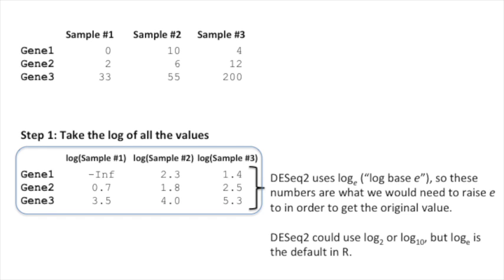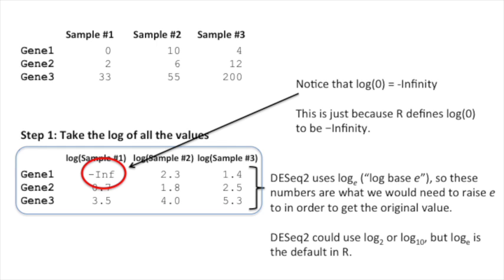Anyways, I think because it's the default, that's why they chose it. Notice that the log of zero equals negative infinity. This is just because R defines log of zero to be negative infinity. If you'd like to learn more about logs, check out the StatQuest on logs.